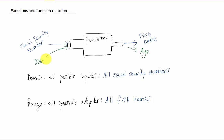What's the domain of the green function where we're inputting DNA? It would just be all the different types of DNA. And the range of that function would be all possible ages. That would be a list of numbers from zero to however old the oldest person is.